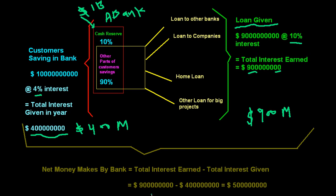So the net money made by the bank: total interest earned is 900 million minus 400 million, and the bank will get 500 million from this banking business. I think you understood.